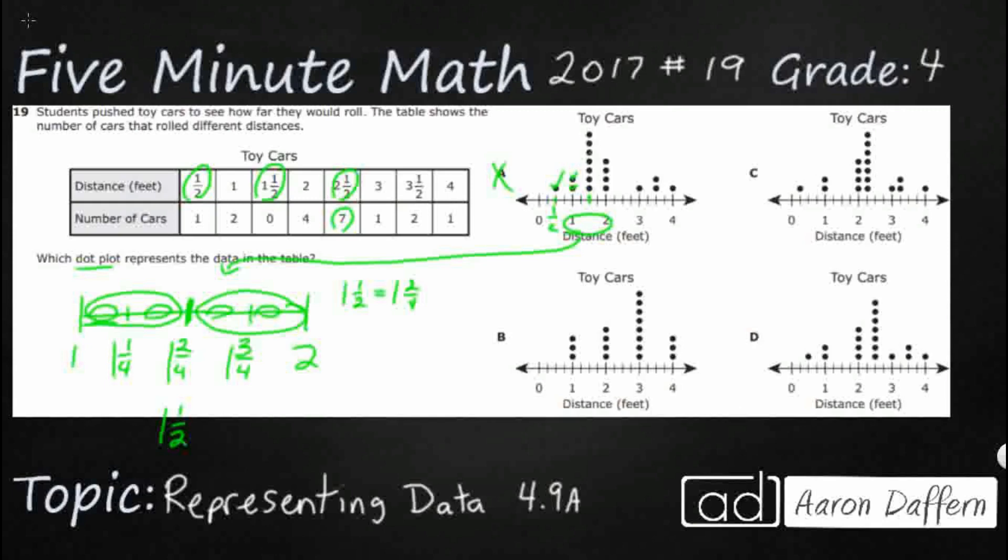So I can already tell you B is going to be incorrect because look, everything is on the whole numbers. We've got one, two, three, four, but look what we have in our table. We've got some on a half. We've got some on two and a half. We've got some on three and a half. So B is already out. So we're down to two.